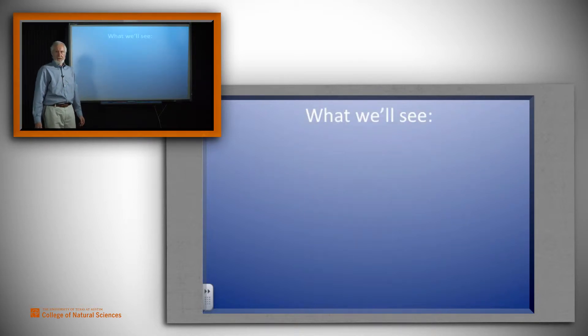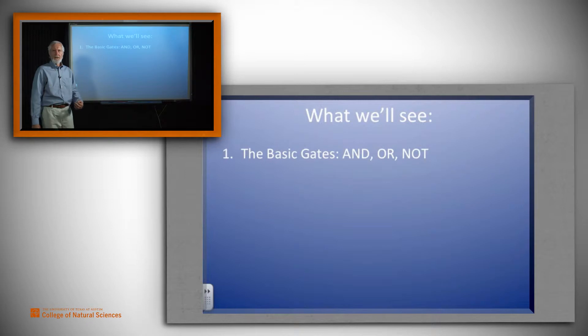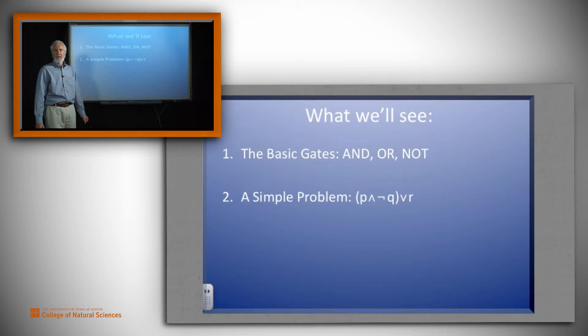So first thing we will see today are three of the basic logical gates: and, or, and not. And then we will employ those gates to build some circuitry for the expression P and not Q or R.